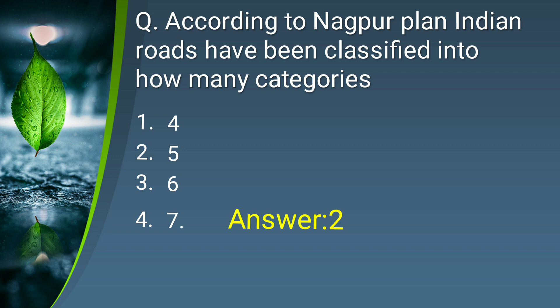The next question: according to the Nagpur road plan, Indian roads have been classified into how many categories? The answer is five categories. Those five categories are: national highways, state highways, major district roads (MDRs), other district roads (ODRs), and village roads. According to the Nagpur road plan, the shape of the road plan is star and grid pattern.